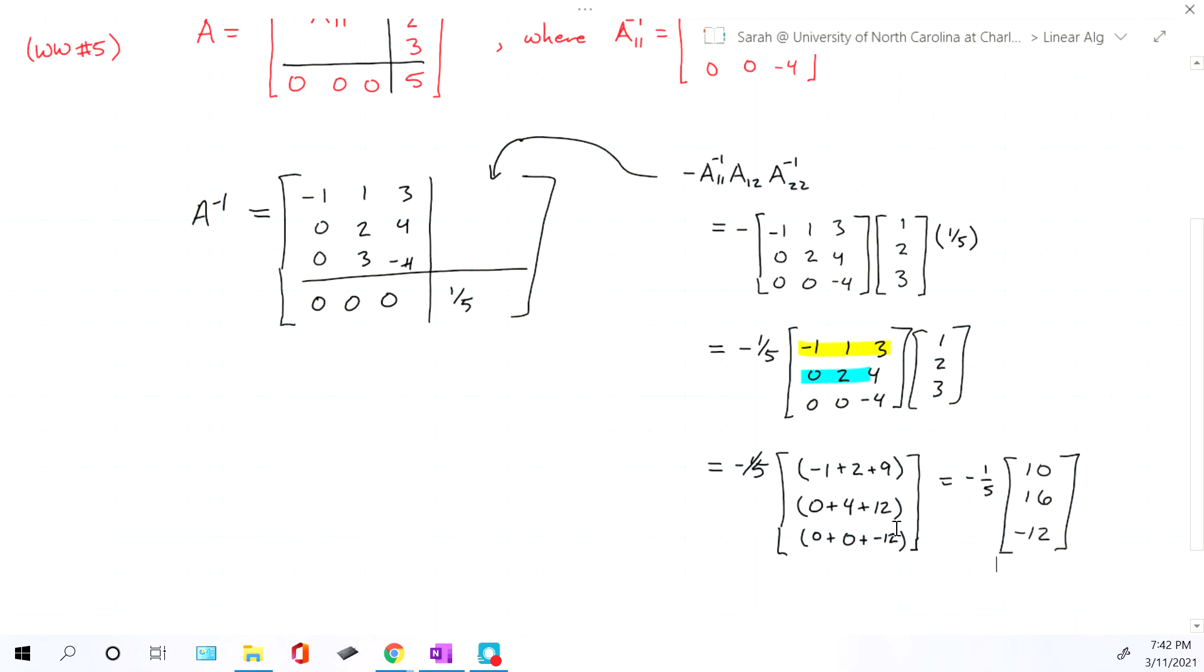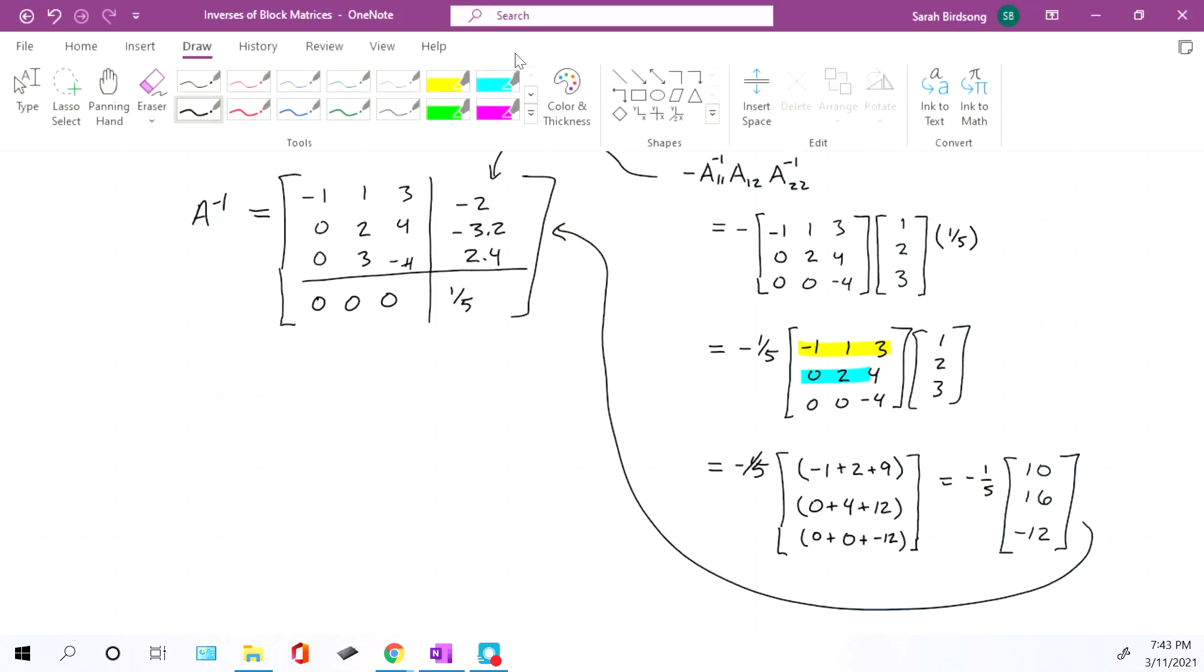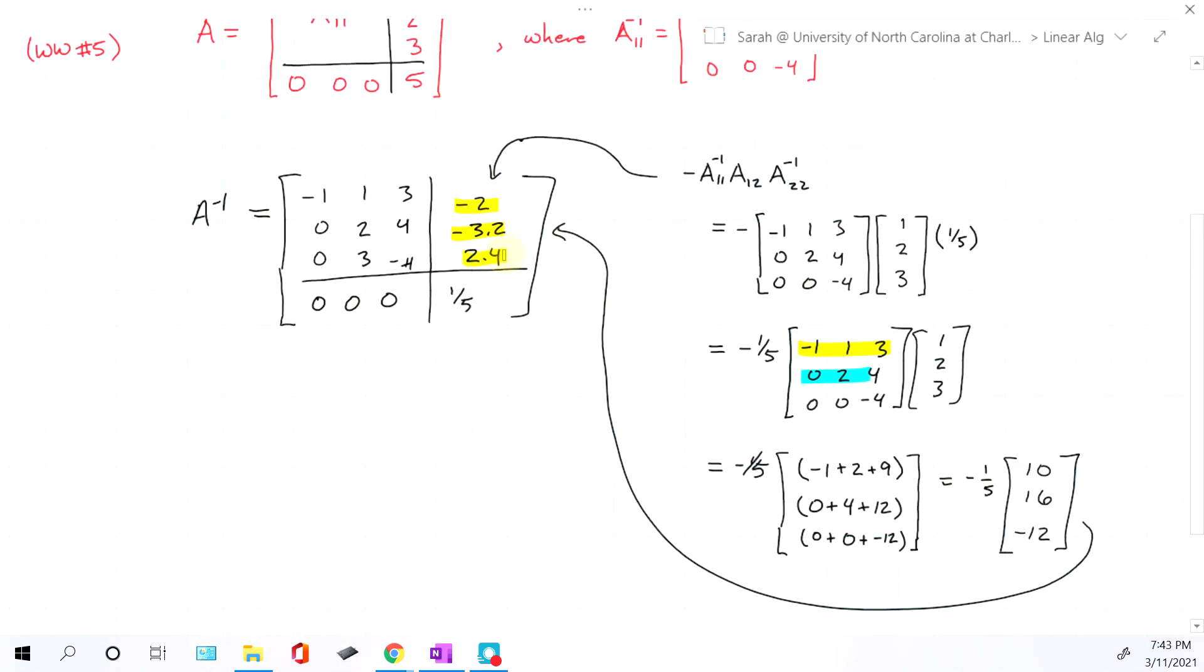And so to get the final answer that you actually need to plug in up there, you want to multiply the negative five through, or negative one fifth through. So negative one fifth of 10 is negative two. Negative one fifth of 16 is negative 3.2. And negative 12 times negative one fifth is going to be positive 2.4.